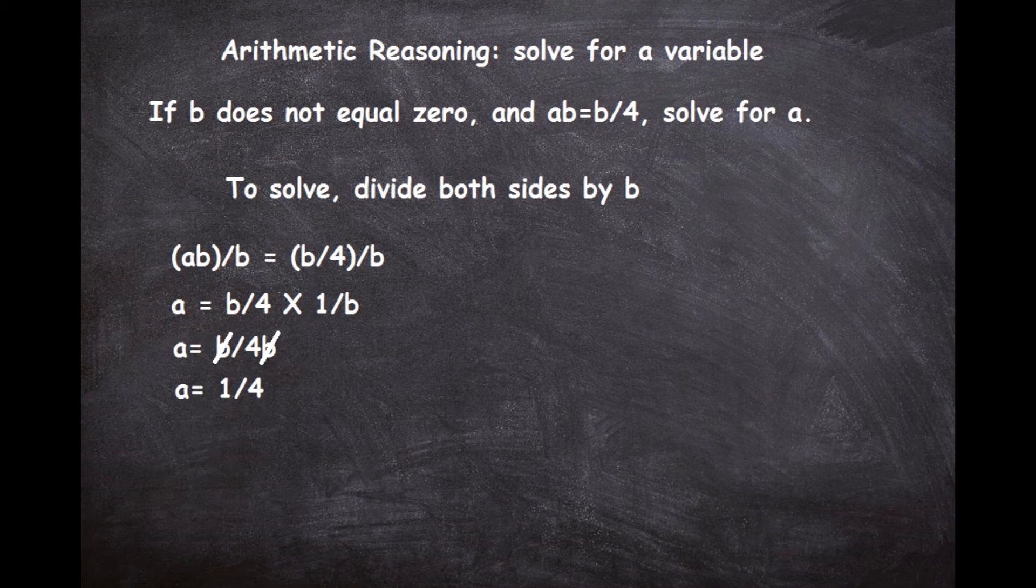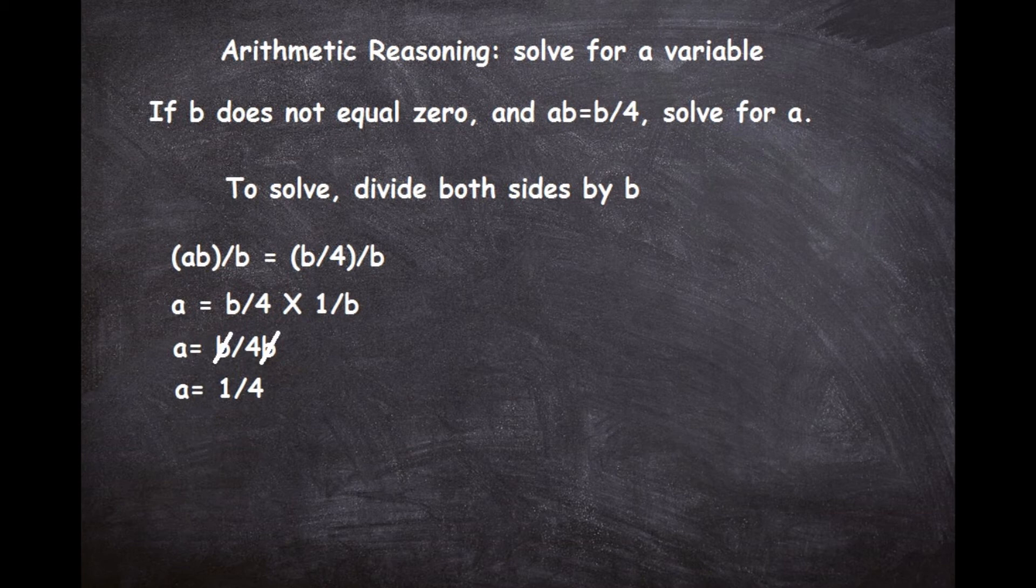So to get to that point, like we said from the beginning, we were trying to get the a by itself, which we did by dividing by b on both sides. Once we divided by b on both sides, we reduced the left-hand side to just a because the b's canceled out. We reduced the right-hand side to b/4 over b.